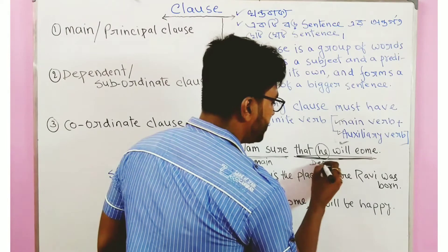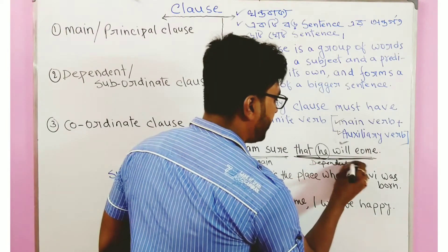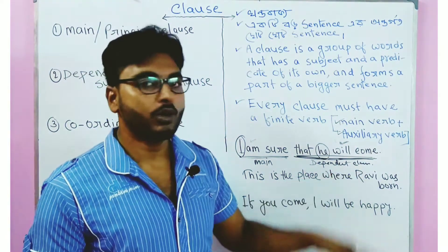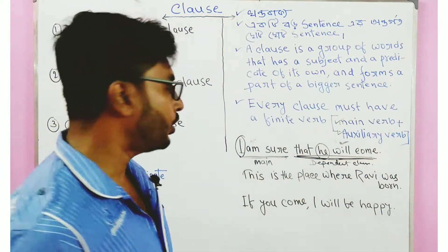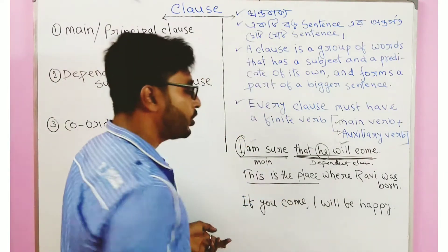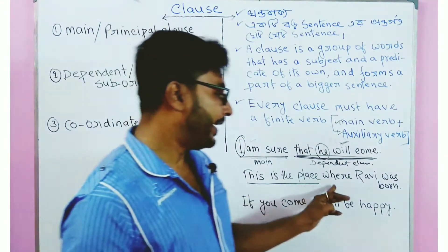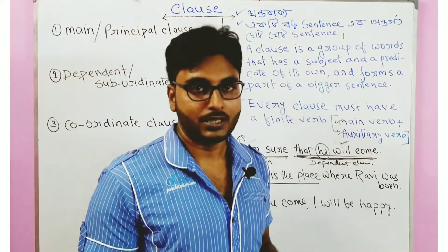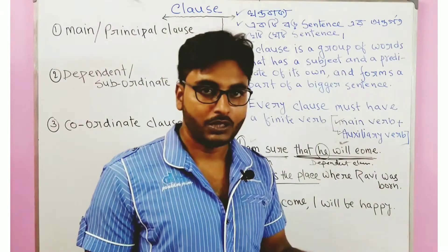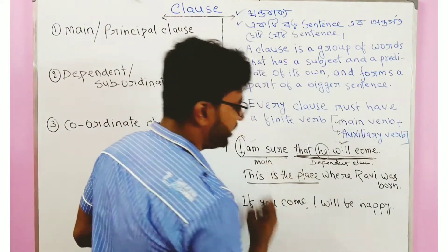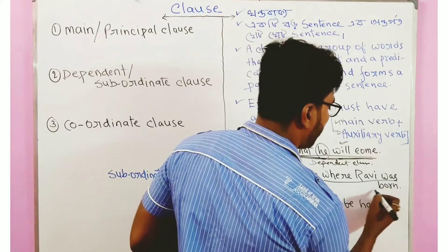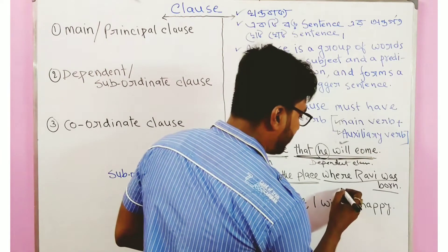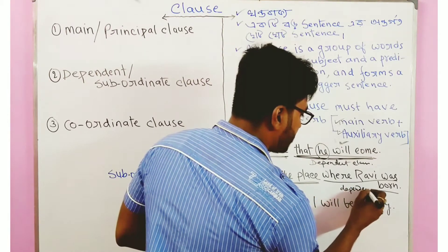The dependent clause cannot stand alone — it depends on the main clause. For example, 'This is the place where Roby was born.' Here 'this is the place' is the main clause, and 'where Roby was born' is the dependent clause, also called a subordinate clause, as it does not make complete sense on its own.